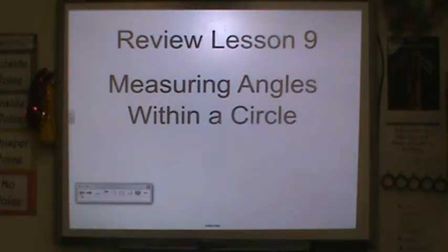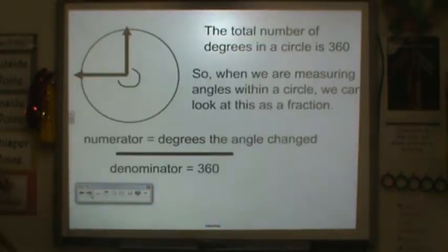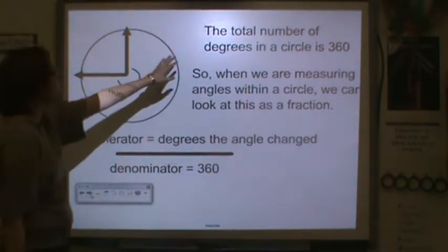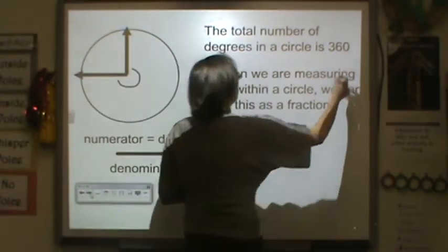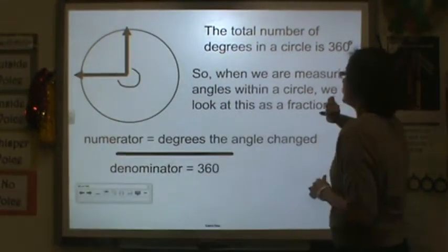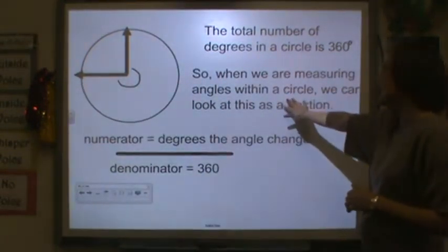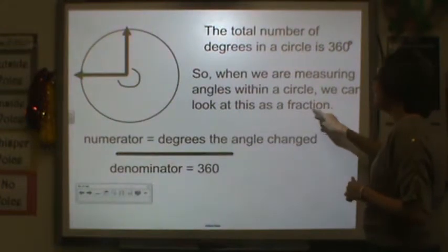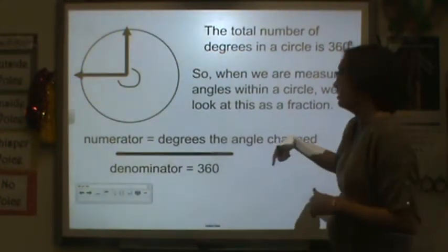This is review lesson 9, measuring angles within a circle. So go ahead and write this down. The total number of degrees in a circle is 360 degrees. When we're measuring angles in a circle, we can look at this as a fraction.